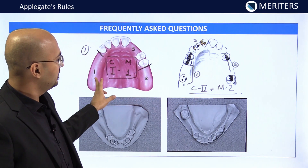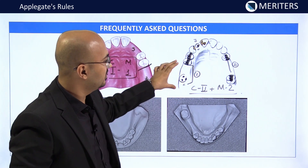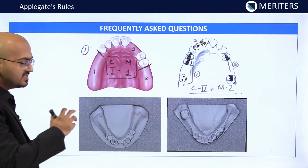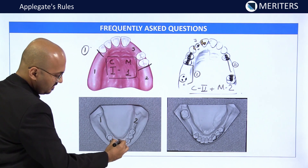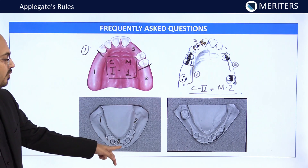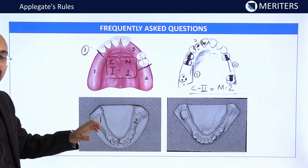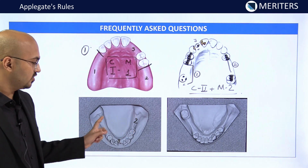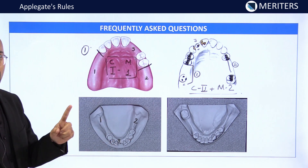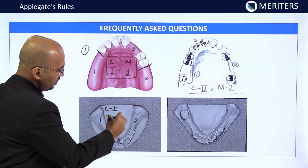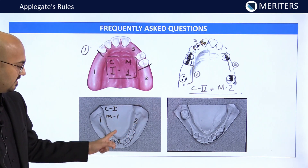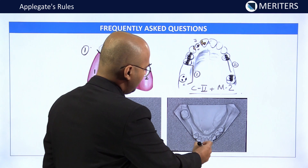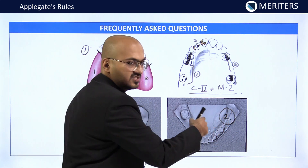In the third image — a mandibular arch — there are three edentulous spaces. Although one is an anterior tooth space, there is no midline crossing involved, so this is not Kennedy's Class 4. Areas 1 and 2 are bilateral edentulous areas with no posterior teeth present — Kennedy's Class 1 — plus one modification space. So this is mandibular Kennedy's Class 1 Modification 1.